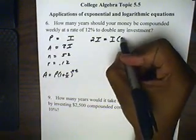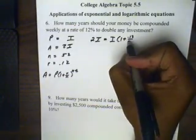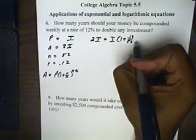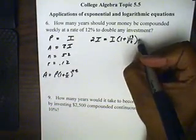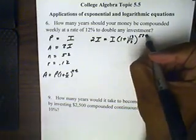The base will be made out of 1 plus r, which is 0.12, over n, which is 52. And all that will be to the power of 52 again, times t.